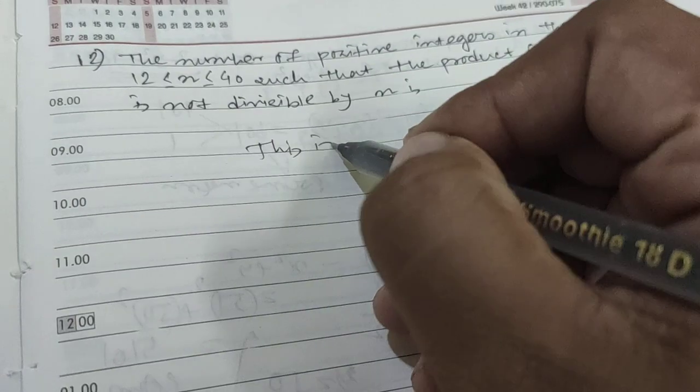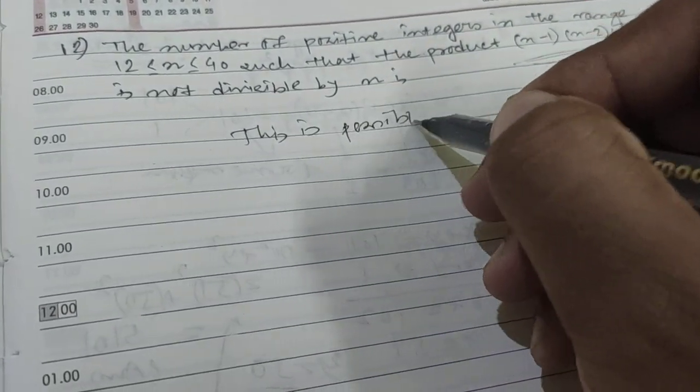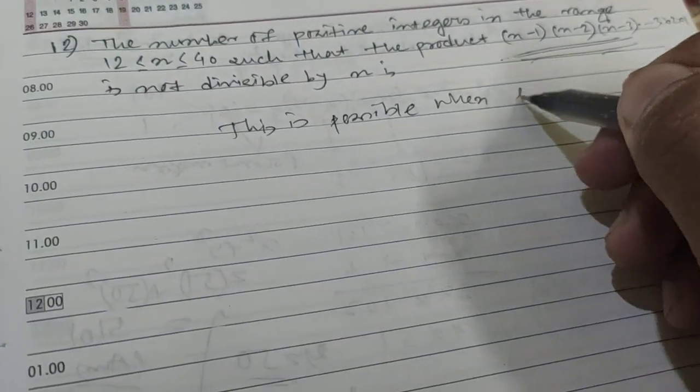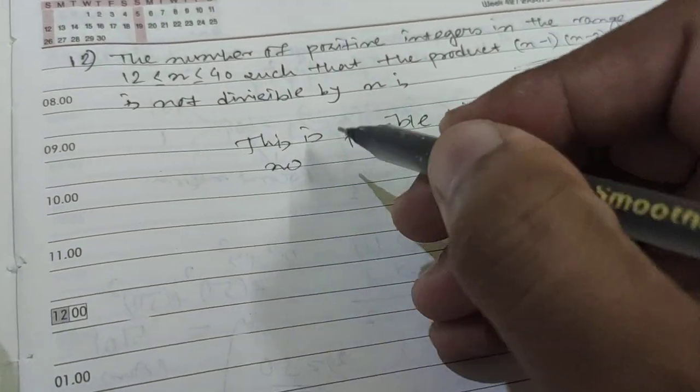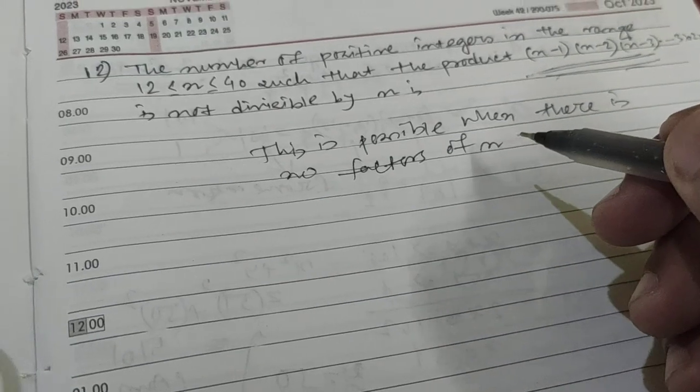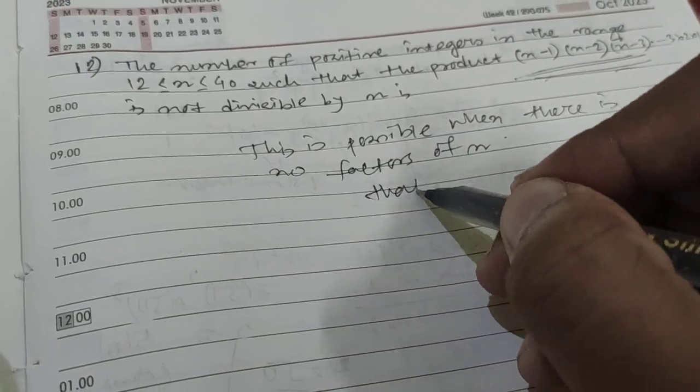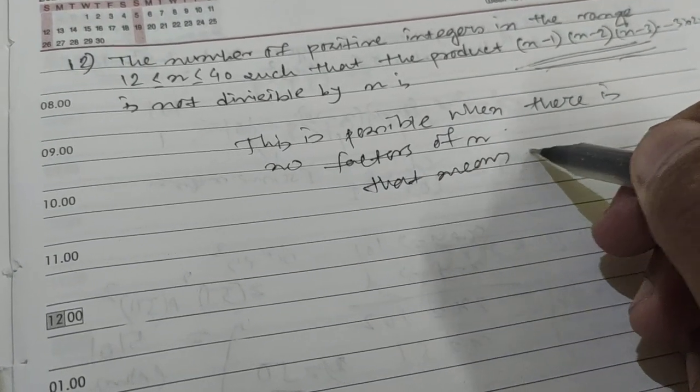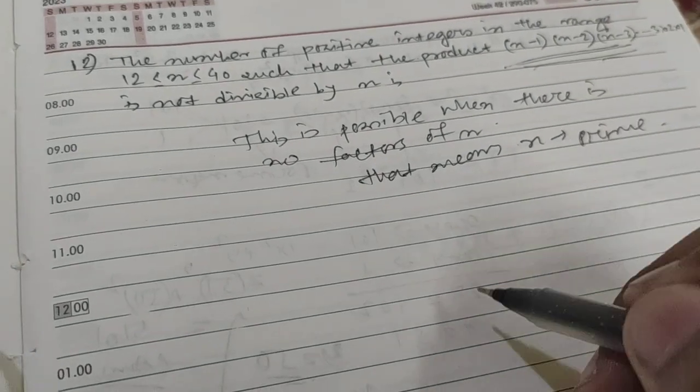This is possible when there are no factors of n, which means n is a prime number.